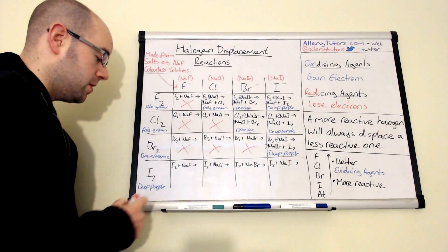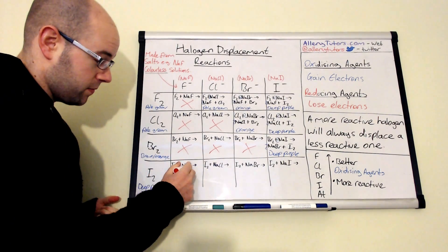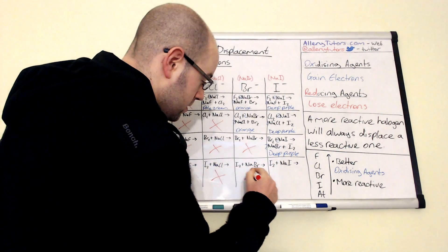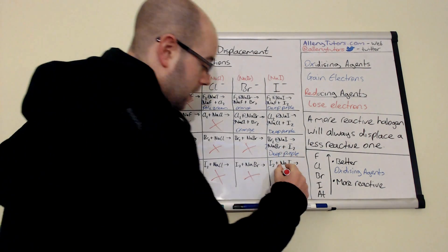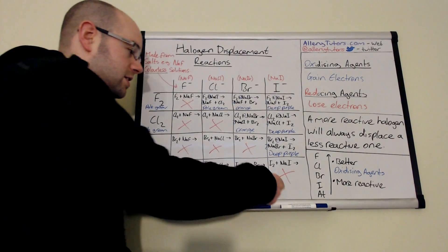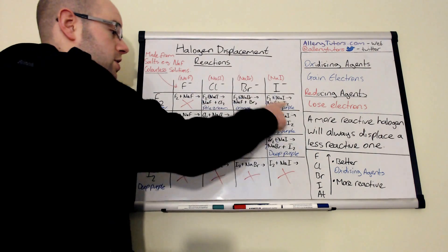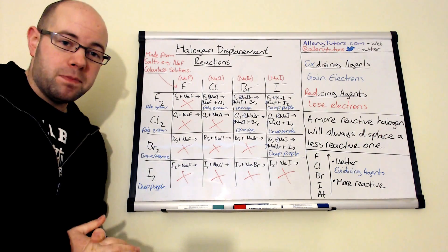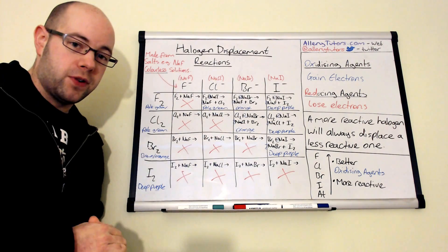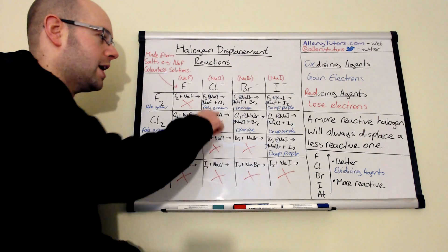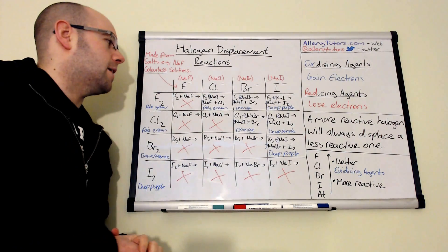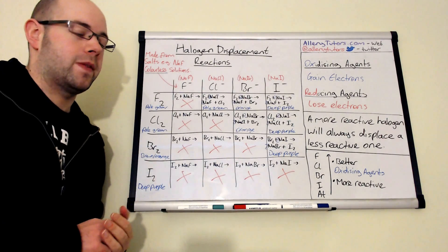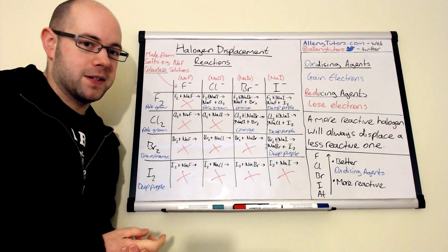Finally, iodine: reacting with fluorine — no reaction; with chlorine — no reaction; with bromine — no reaction; with iodine — equally reactive, so no reaction. You can see that some reactions do occur but the vast majority don't. It's important that you can remember these. The equations shown are full equations, but you might also be asked to write ionic equations — just remove the sodium as spectator ions. For example: F2 plus Cl⁻ forms F⁻ plus Cl2. That's it — hope that helps, bye.